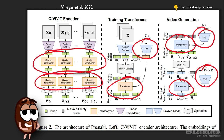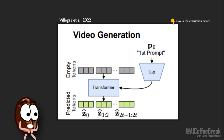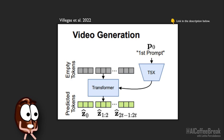To produce video we start from the text. We are doing deep learning here, so every modality should be represented as a vector. The authors use a pre-trained T5X language model to produce word vectors from the text.